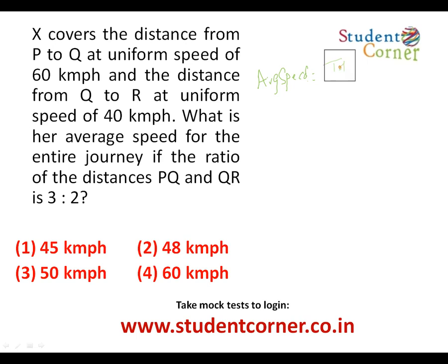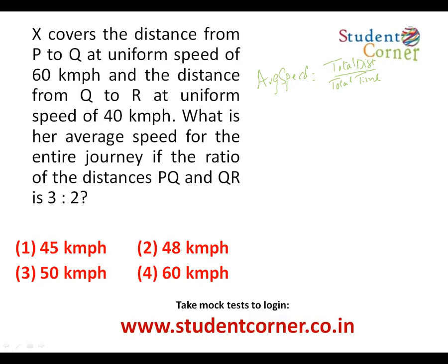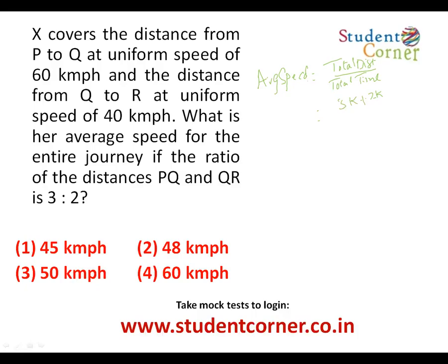Average speed is equal to the total distance divided by the total time. Let us mark the distances as 3k and 2k based on the given ratio of 3 is to 2. So total distance is 3k plus 2k. We know the distance and we know the speed — 3k is covered at 60 km per hour and 2k is covered at 40 km per hour.